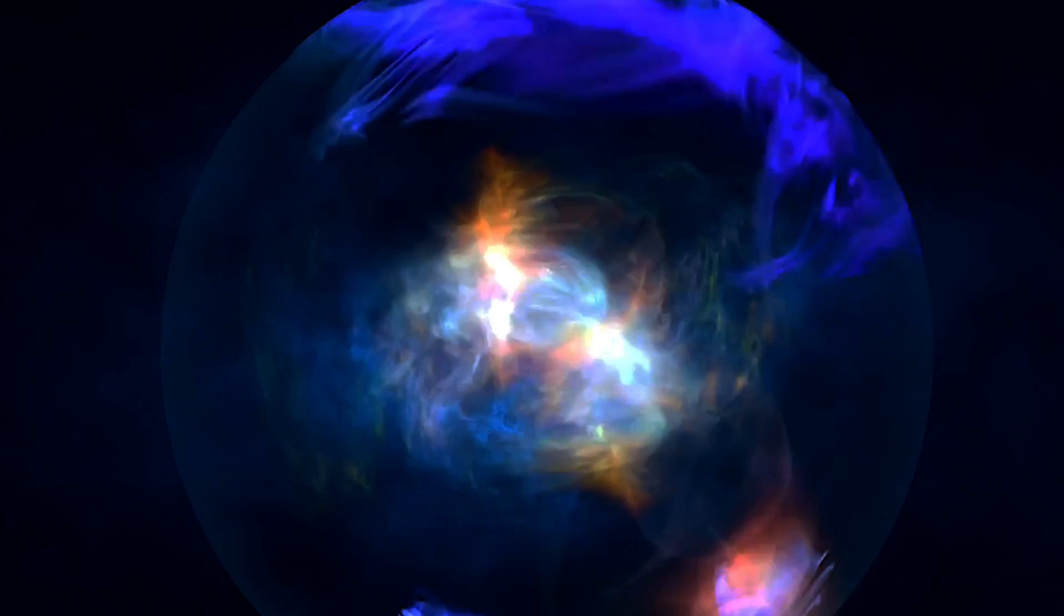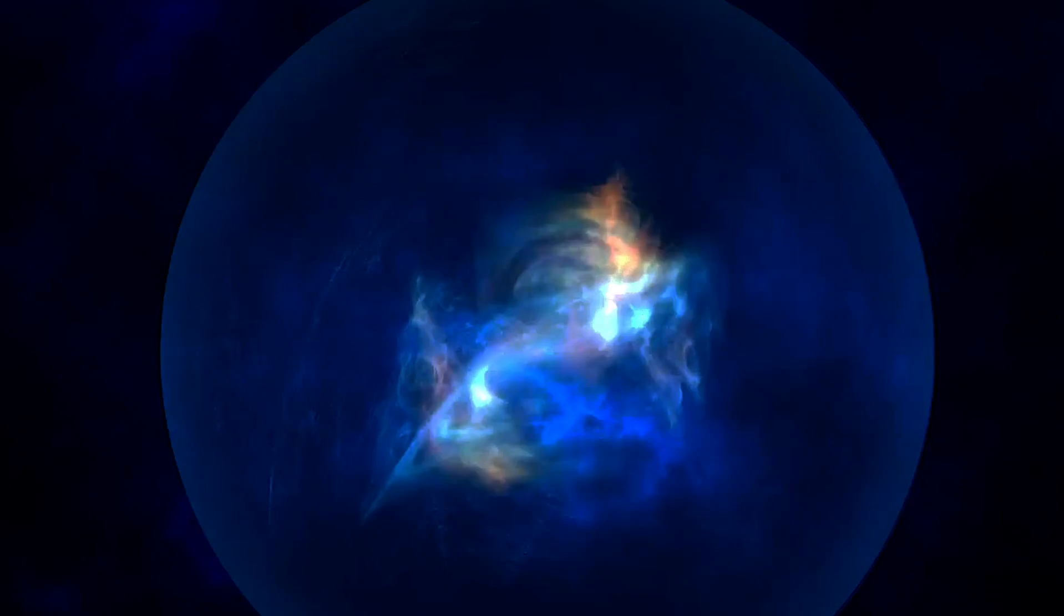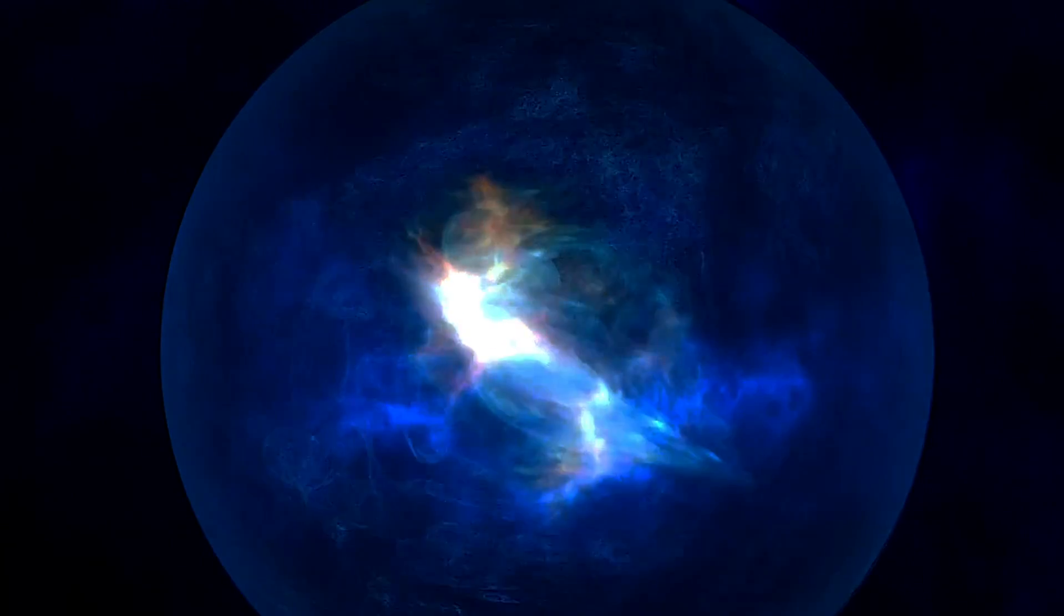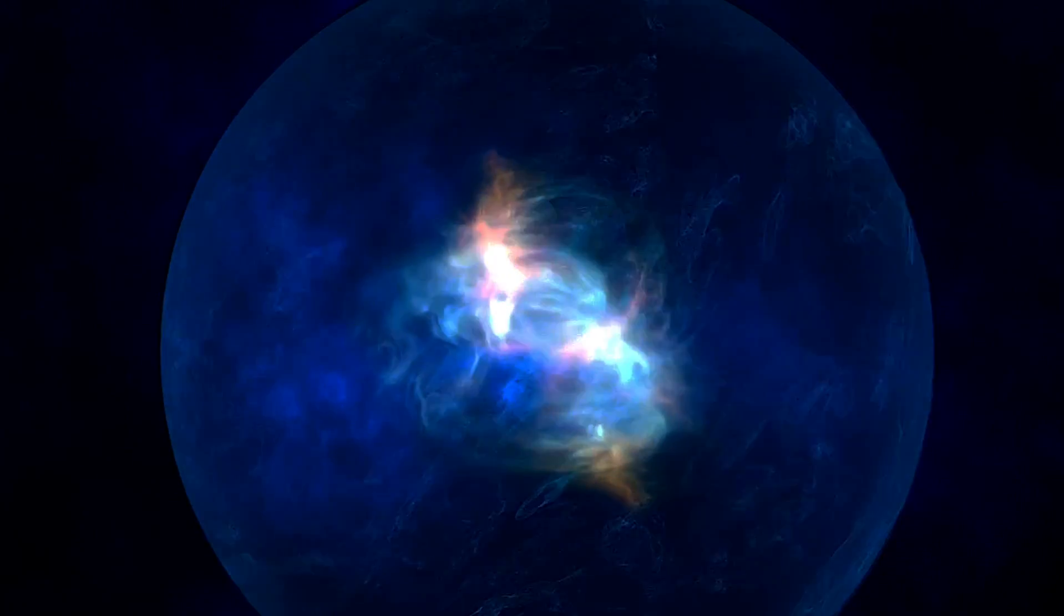Black holes can be of different types based on their mass. They can also be classified based on whether they are charged or exhibit rotation. The simplest black hole is a static, non-rotating, and electrically neutral black hole called the Schwarzschild black hole.